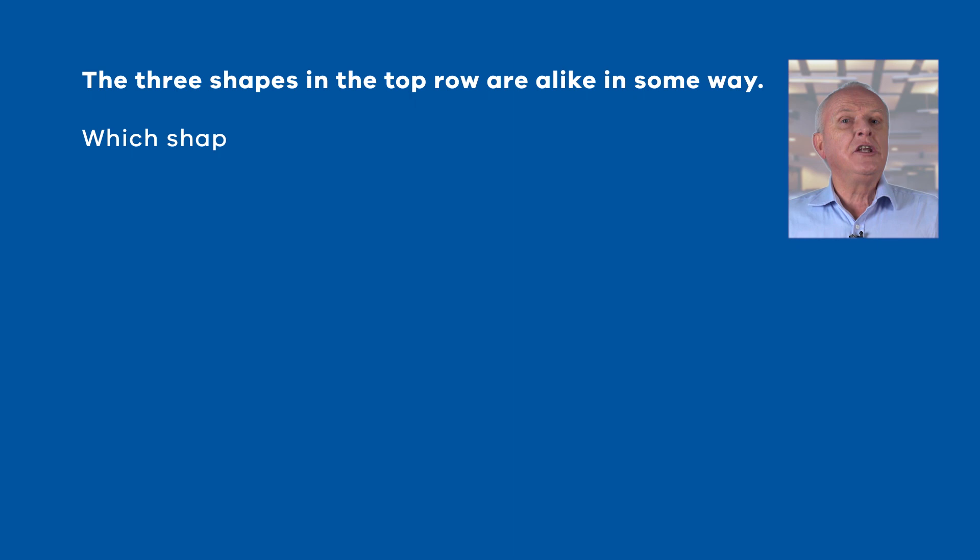We are going to look at examples of different types of abstract reasoning questions. While we can't cover all the different types of questions, taking note of how we apply the strategies to the examples will help you with other types of questions. In this question, you need to select the option — either A, B, C, D, or E — that is most like the diagrams in the top row.